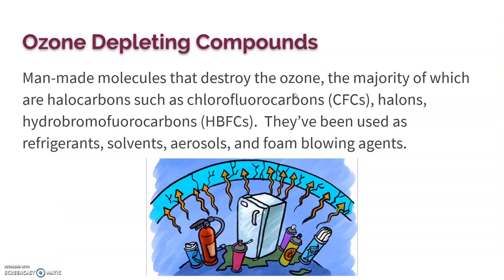Ozone molecules are broken up by what are called ozone-depleting substances or compounds. These are man-made molecules capable of breaking apart the ozone molecules. The majority of these are halocarbons — halo means it has a halogen in it, such as chlorine, fluorine, or bromine, anything in group 7A of the periodic table. They come from substances such as refrigerants, solvents, aerosols, and foam-blowing agents.